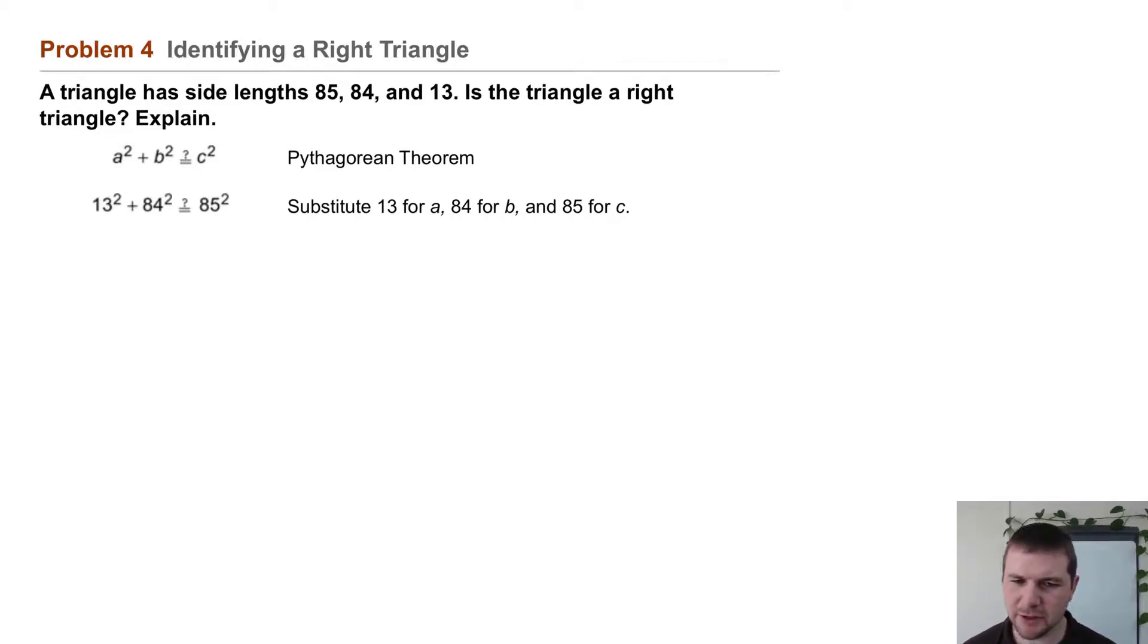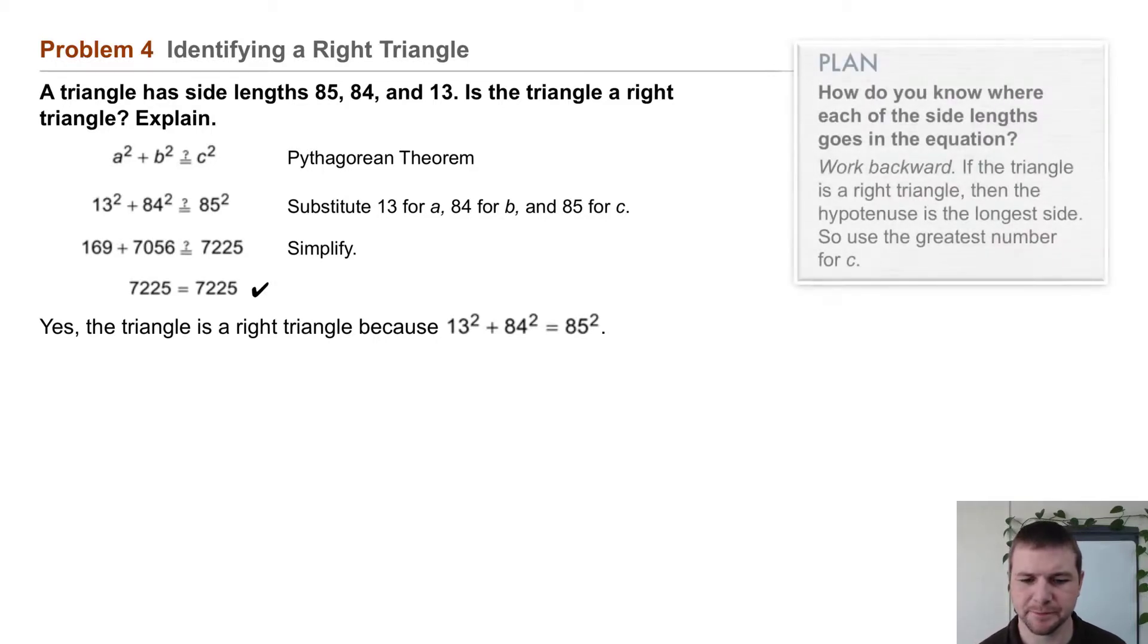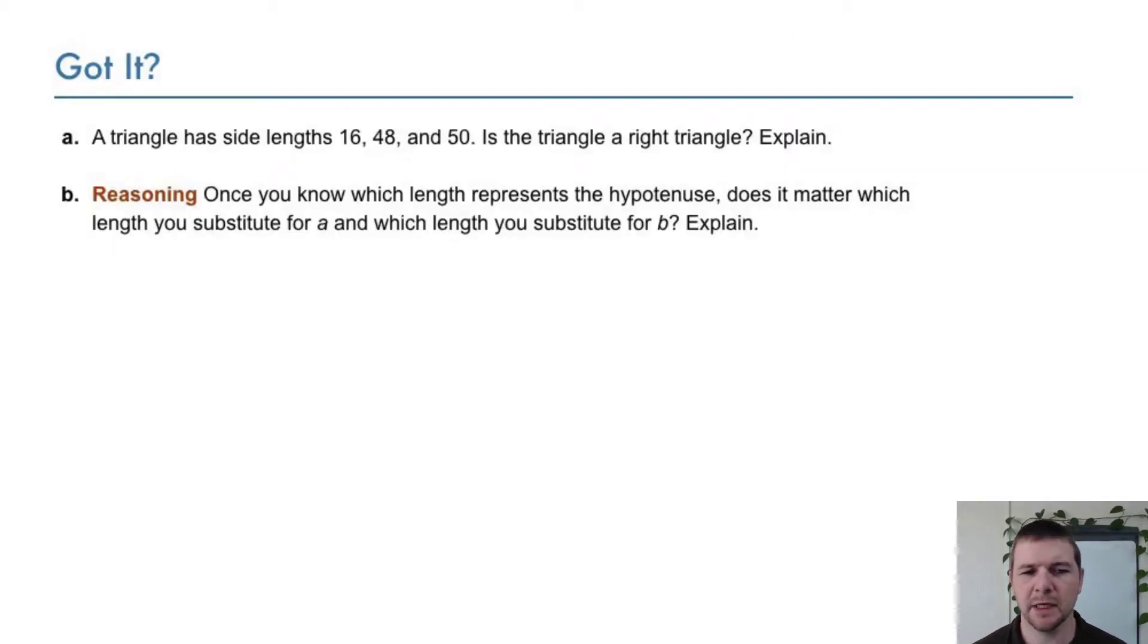Is it true that 169 + 7056 = 7225? Sure enough. So yes, the triangle is a right triangle because 13² + 84² = 85².